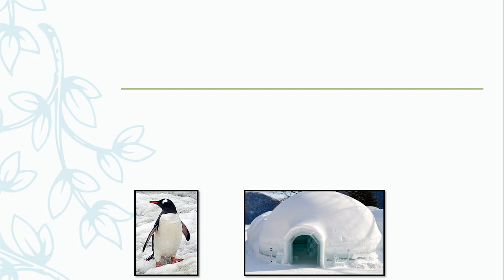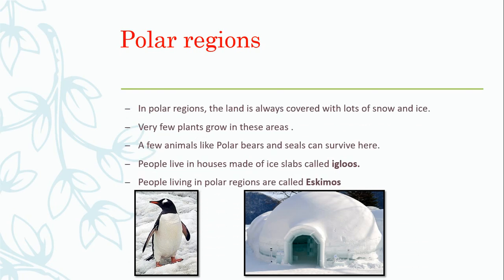Now, can you guess this type of land? Yes. It was quite hard but a little easy too, because of the snow all around and the igloo and the penguins. Now, what are polar regions? In polar regions, the land is always covered with lots of snow and ice. Very few plants grow in these areas. A few animals like polar bears and seals can survive here. Because of the cold weather, people live in houses made of ice slabs called igloos. People living in polar regions are called Eskimos.